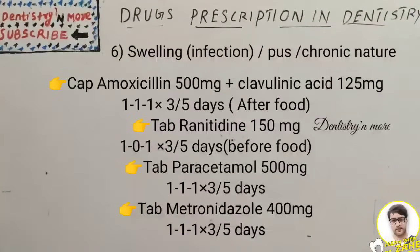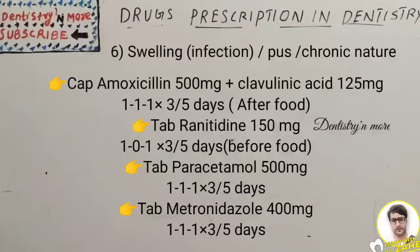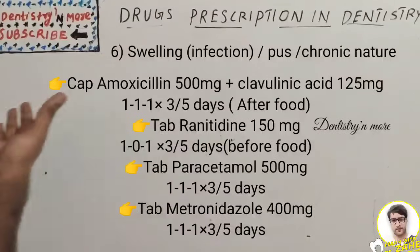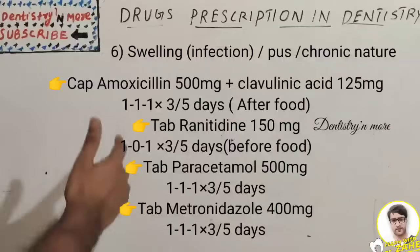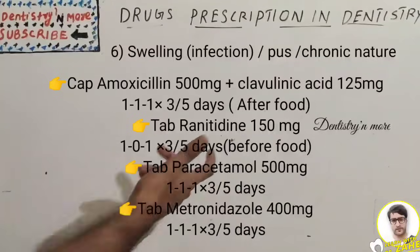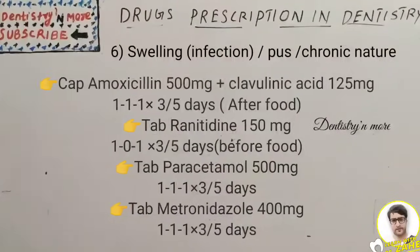In a chronic infection state, aerobic bacteria change to anaerobic bacteria. For anaerobic infection, metronidazole is necessary. For a new, acute infection, plain amoxicillin or amoxicillin-clavulanic acid 625 mg may suffice. The full prescription for an infection case with pus: paracetamol for three days, amoxicillin-clavulanic acid 625 mg for three to five days, ranitidine twice daily, and metronidazole 400 mg for three days.